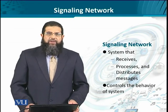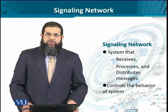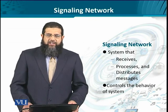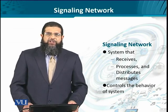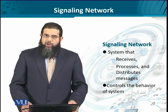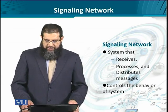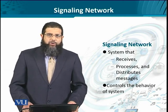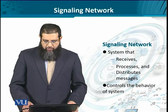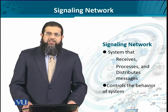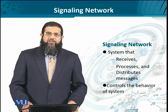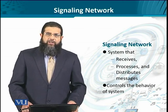With these variants of signaling schemes understood, we are now in a good position to understand a signaling network. A signaling network is a combination of network elements that work together to receive, process, and distribute messages associated with signaling, with the eventual goal of controlling the behavior of the overall system — the telephone network that is meant to realize telephone calls between parties.